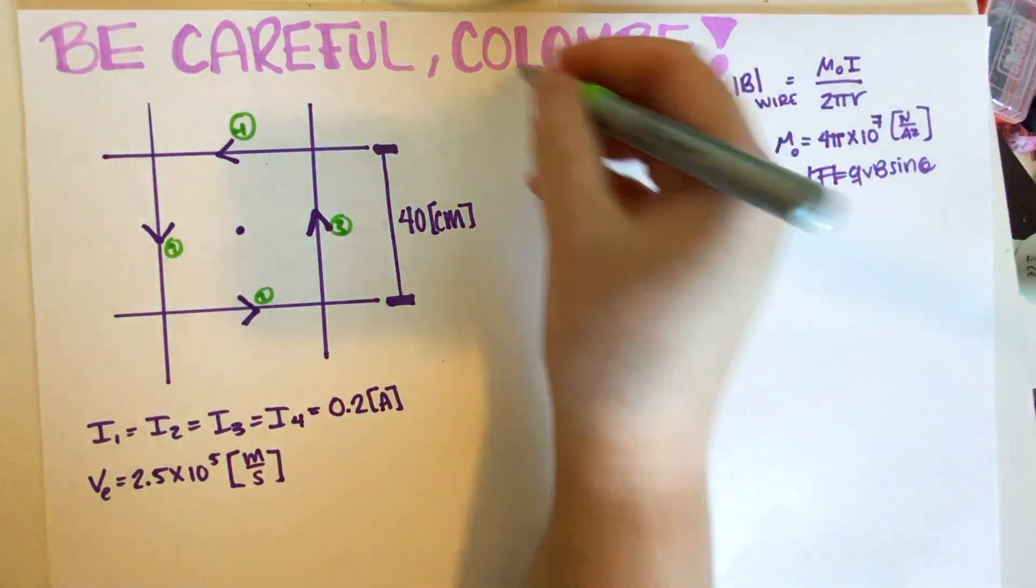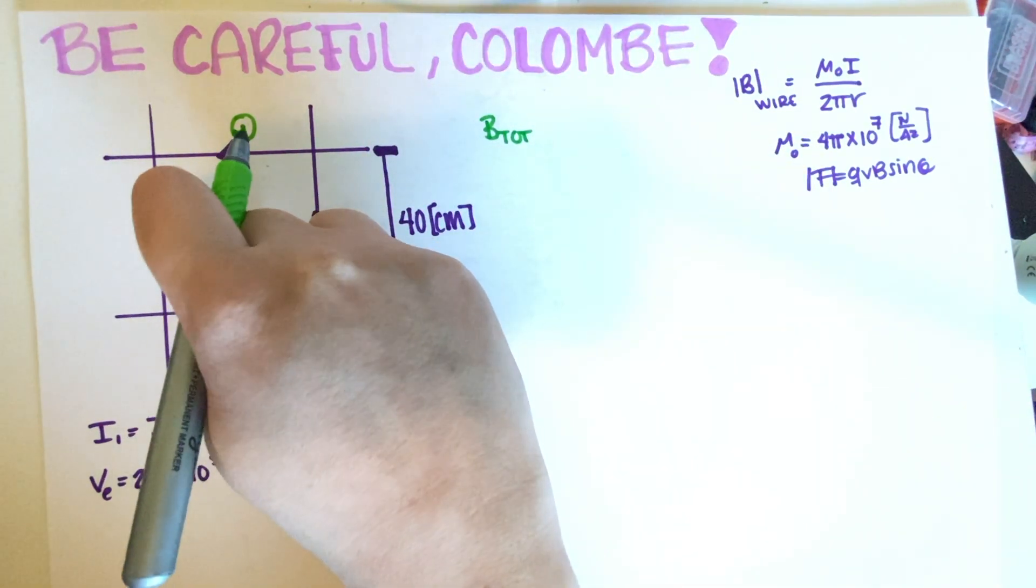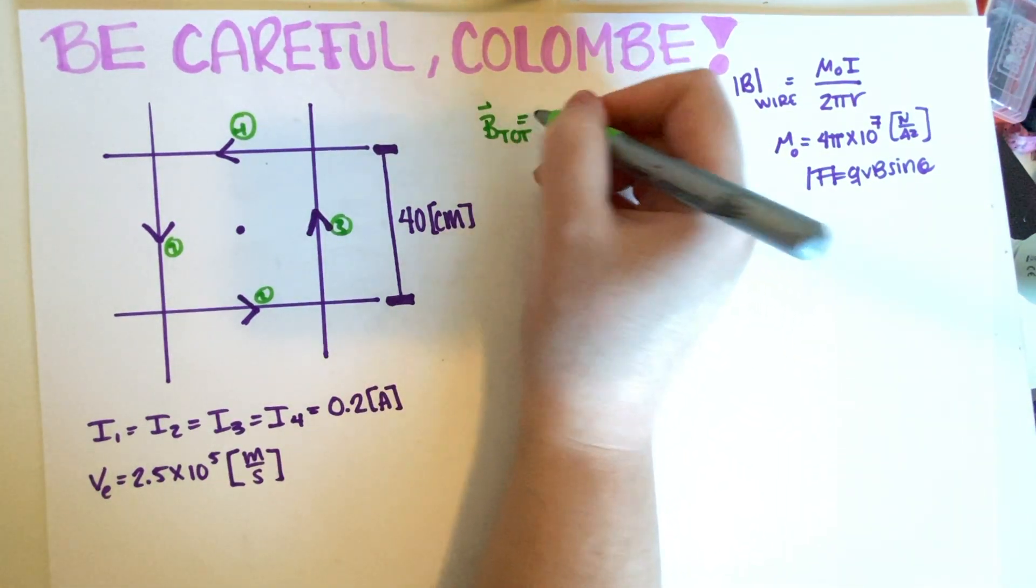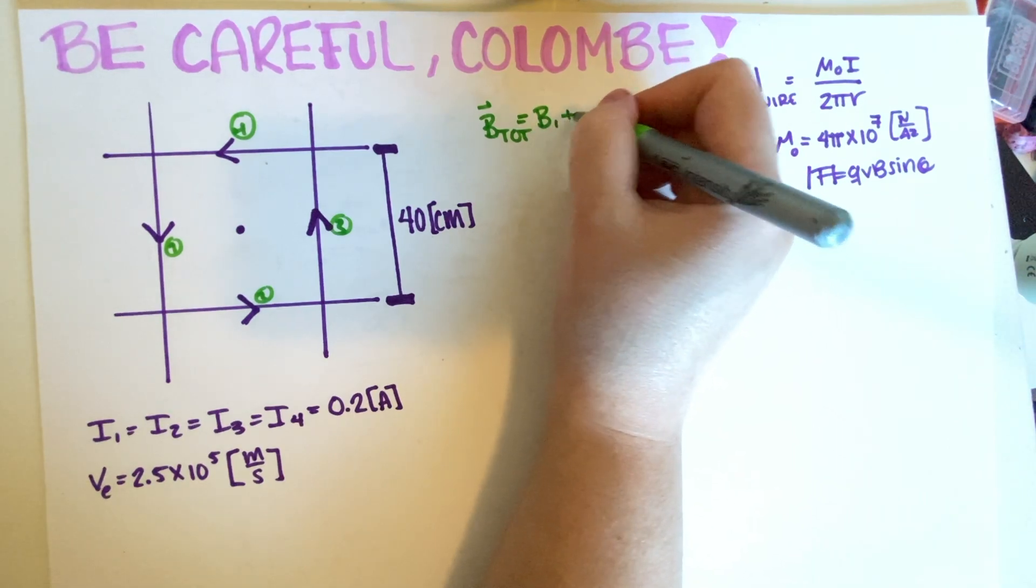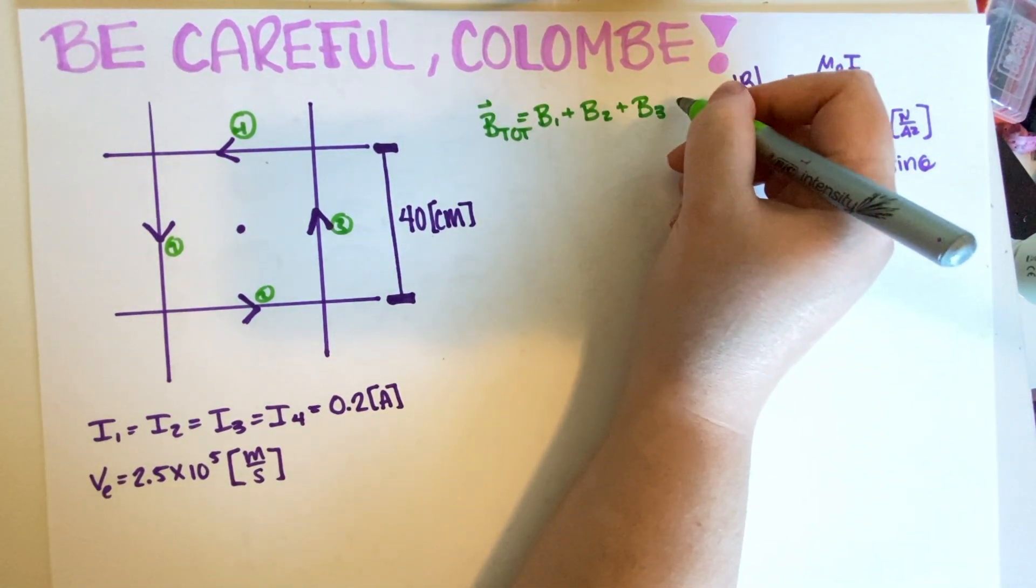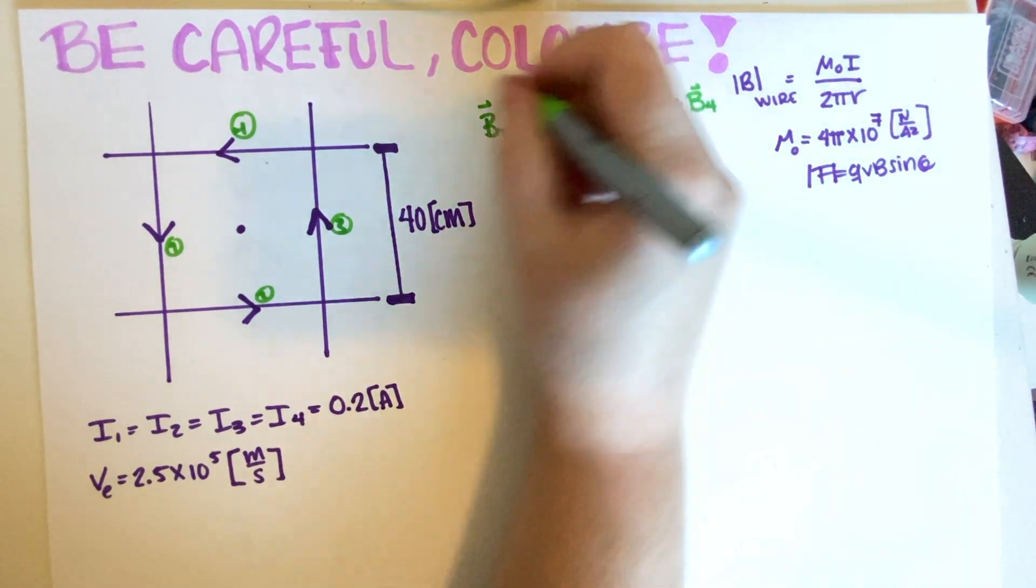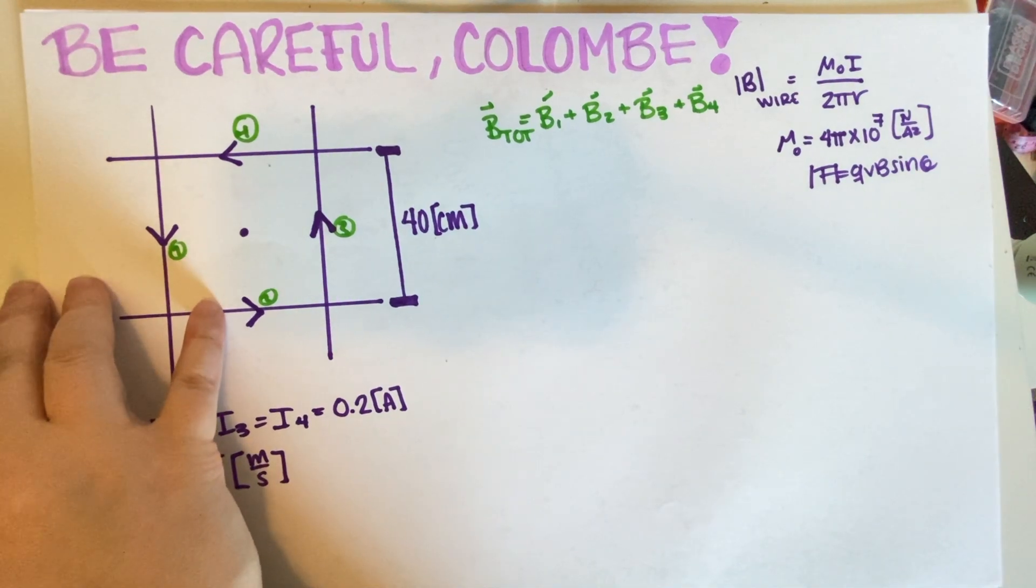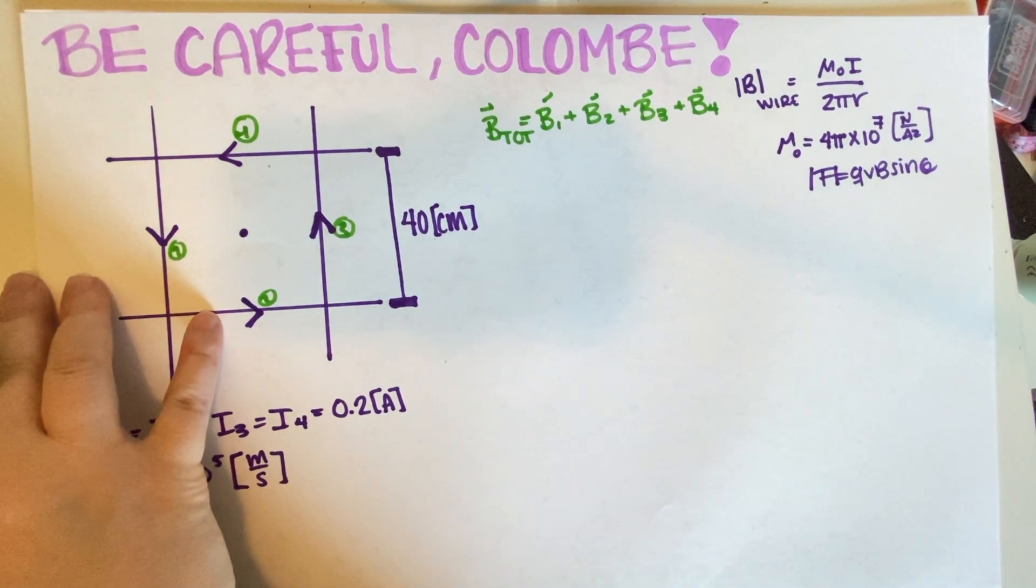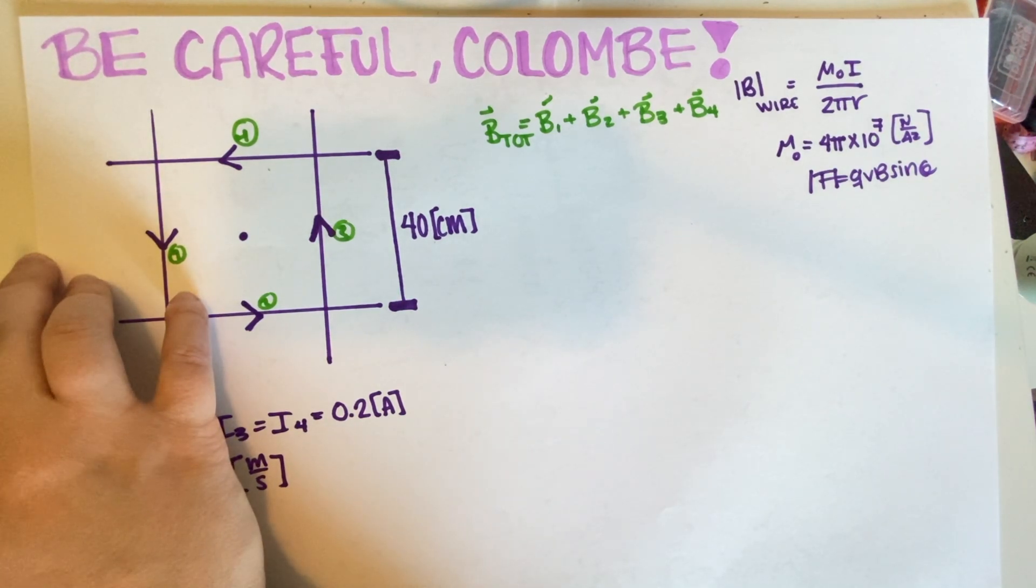Now, the total magnetic field at this point is going to be because these are vectors, they add up. So this will be B1 plus B2 plus wire three plus wire four like this. So this is how we would do it. Now, the first thing that we have to figure out is the directions.